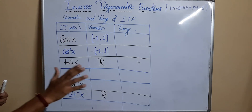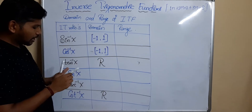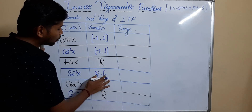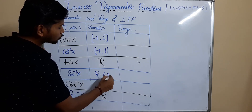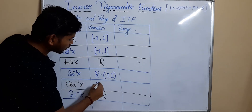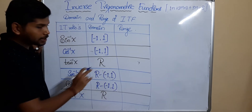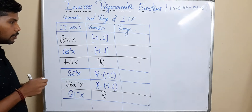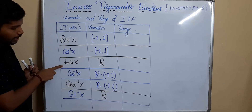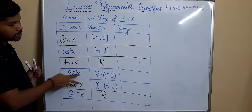The remaining two — sec⁻¹(x) and cosec⁻¹(x) — are also having the same domain, that is the real number system excluding [-1, 1]. So to summarize: sin⁻¹(x) and cos⁻¹(x) share the same domain; tan⁻¹(x) and cot⁻¹(x) share the same domain; and sec⁻¹(x) and cosec⁻¹(x) share the same domain.